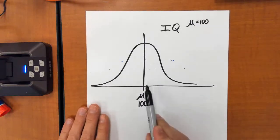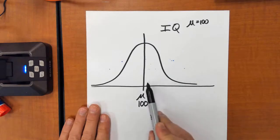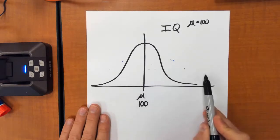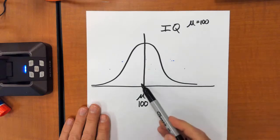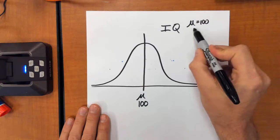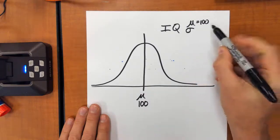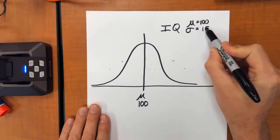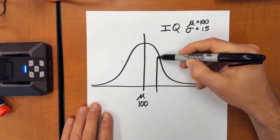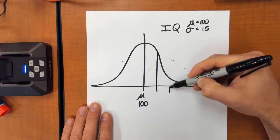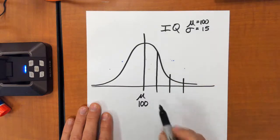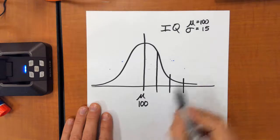That means that 50% of the population has an IQ that is basically at or greater than 100, and then the other 50% of the population has an IQ that's below 100. The standard deviation for IQ is 15. So if we come out one standard deviation, two standard deviations, three standard deviations. Our standard deviation is 15.